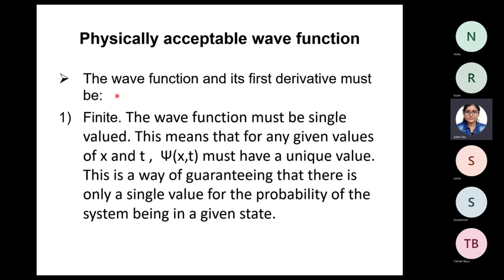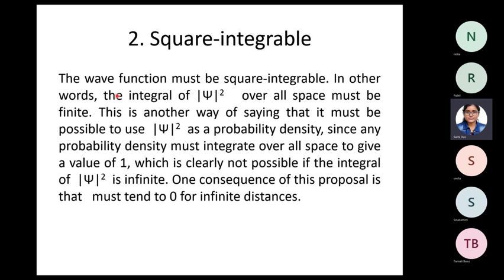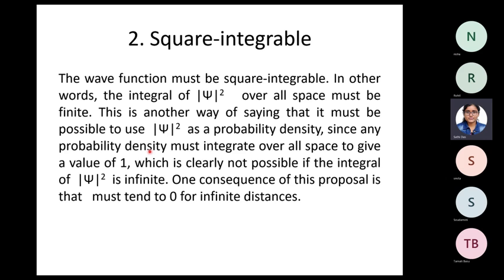The wave function must be square-integrable, meaning the integral of mod-square of psi over all space must be finite. This is just another way of saying it must be possible to use mod-psi-squared as a probability density. Since integrating over all space must give a value of one, this is clearly not possible if the integral of mod-psi-squared is infinite. A consequence is that psi must tend to zero at infinite distances.